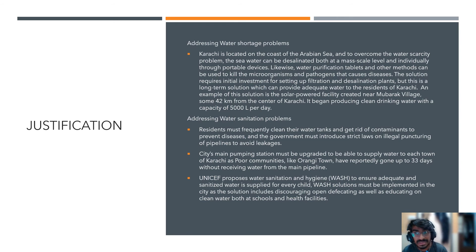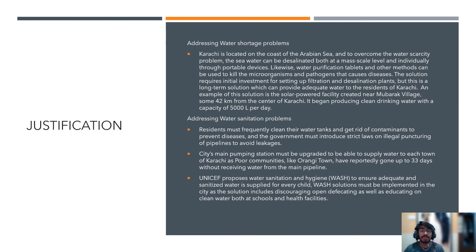For water sanitation problems, residents must frequently clean their water tanks to get rid of contaminants, and the government must introduce strict laws on illegal puncturing of pipelines to avoid leakages. The city's main pump station needs to be upgraded because some poor towns of Karachi face the issue of not receiving water for up to a month — Orangi Town, for example, has reportedly gone up to 33 days without receiving water.